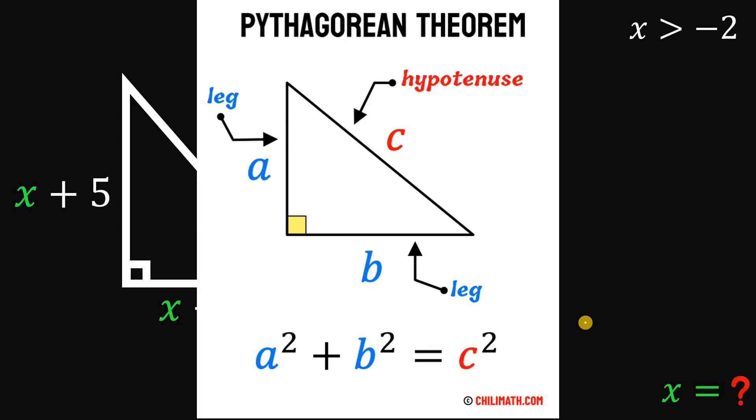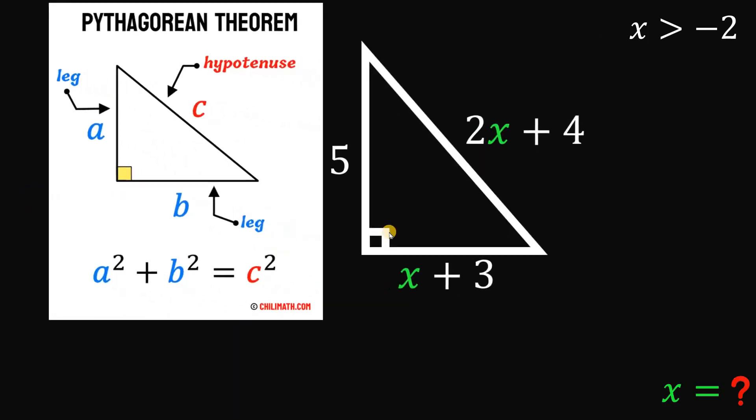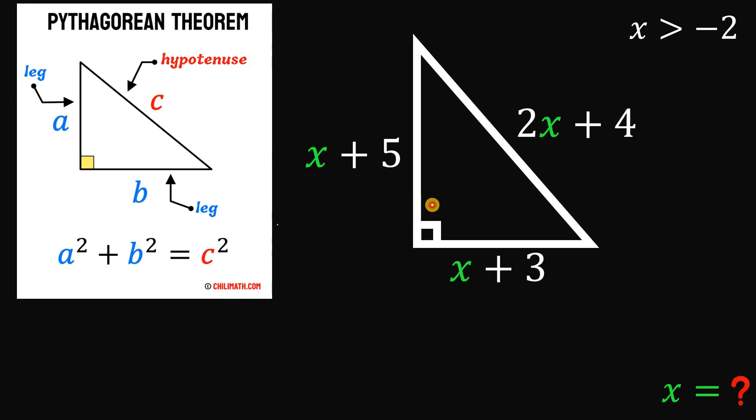So a squared plus b squared equals c squared. So if we apply the Pythagorean theorem in our right triangle, we have x plus 5 raised to the power of 2 plus x plus 3 raised to the power of 2 equals 2x plus 4 raised to the power of 2.